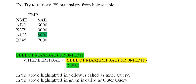I'm writing an outer query: SELECT MAX(salary) FROM EMP WHERE EMP.salary < (SELECT MAX(salary) FROM EMP). First, the inner query selects the max salary, which is 9000. Then the outer query checks: is 8000 less than 9000? Yes, that's correct.